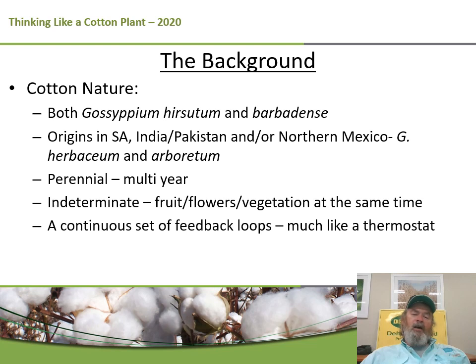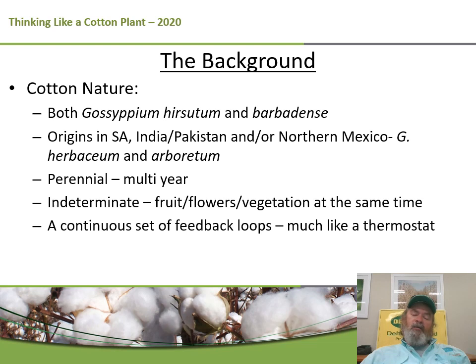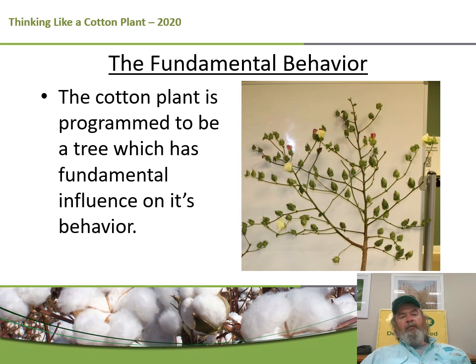Indeterminate plants fruit and flower at the same time — in other words, they are reproductive and vegetative simultaneously. This means we have a need and an ability in many cases to manipulate the relationship between vegetative and reproductive growth. That's really what we talk about when we discuss managing cotton plants with growth regulators. Cotton is also a continuous set of feedback loops. Think of it like a thermostat: if it's set to cool and it gets hot in the room, it turns on the air conditioning in a certain order — and the cotton plant works very similarly.